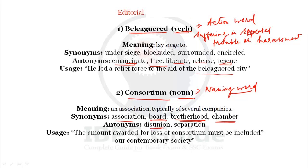Synonyms of consortium: association, board, brotherhood, and chamber. The opposite word will be disunion and separation. Example use: 'The amount awarded for loss of consortium must be included in our contemporary society' — meaning the loss of that association must be included.